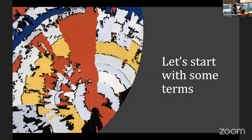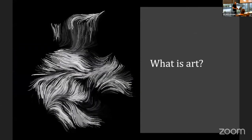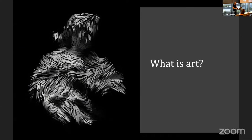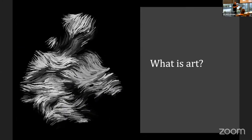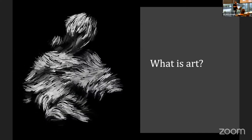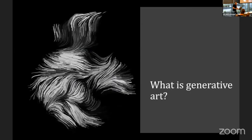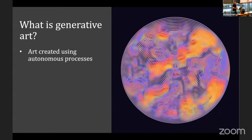Let's talk about some terms first. By the way, this image is Pete Mondrian's painting which I ran through an algorithm called the Generalized Smoke algorithm — super interesting, check it out. So what is generative art? Generative art is art created using some autonomous process involved in the making. An autonomous process is some process that is not under the direct control of the artist.